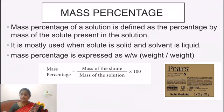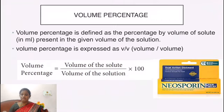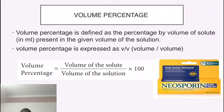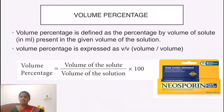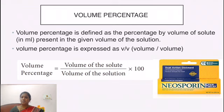Mass percentage is expressed using the unit w/w (weight by weight), where one weight is the solute and the other is the solution. Volume percentage is defined as the percentage by volume of solute in mL present in the given volume of solution. It is expressed as v/v (volume by volume). Volume percentage = (volume of solute / volume of solution) × 100.